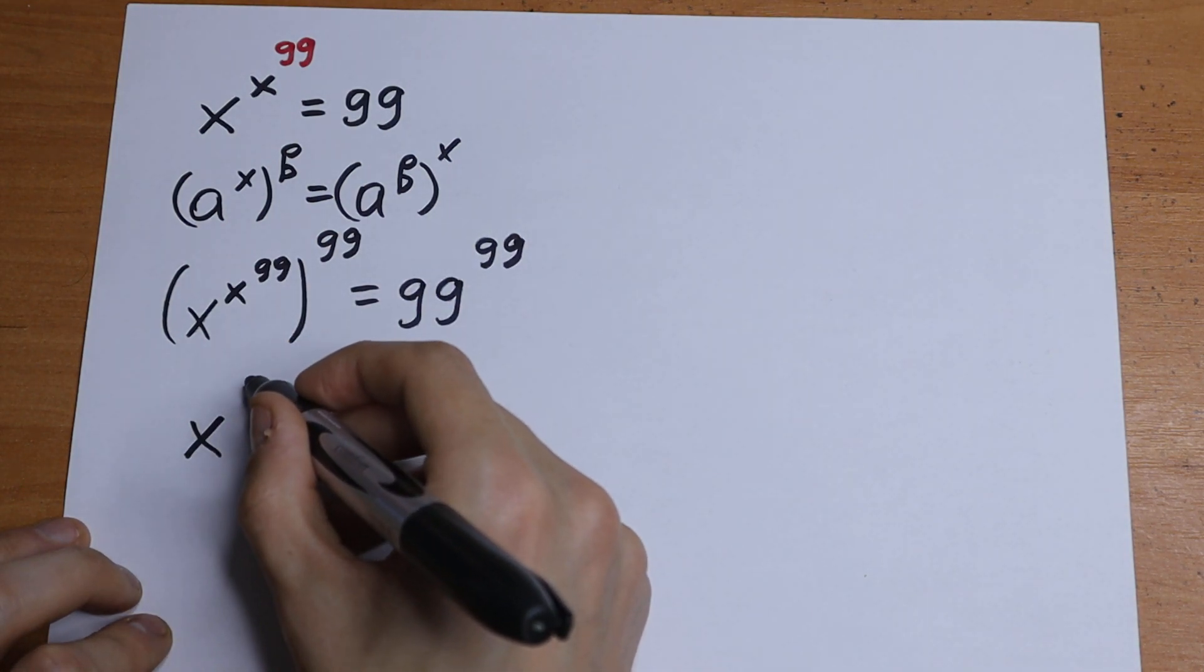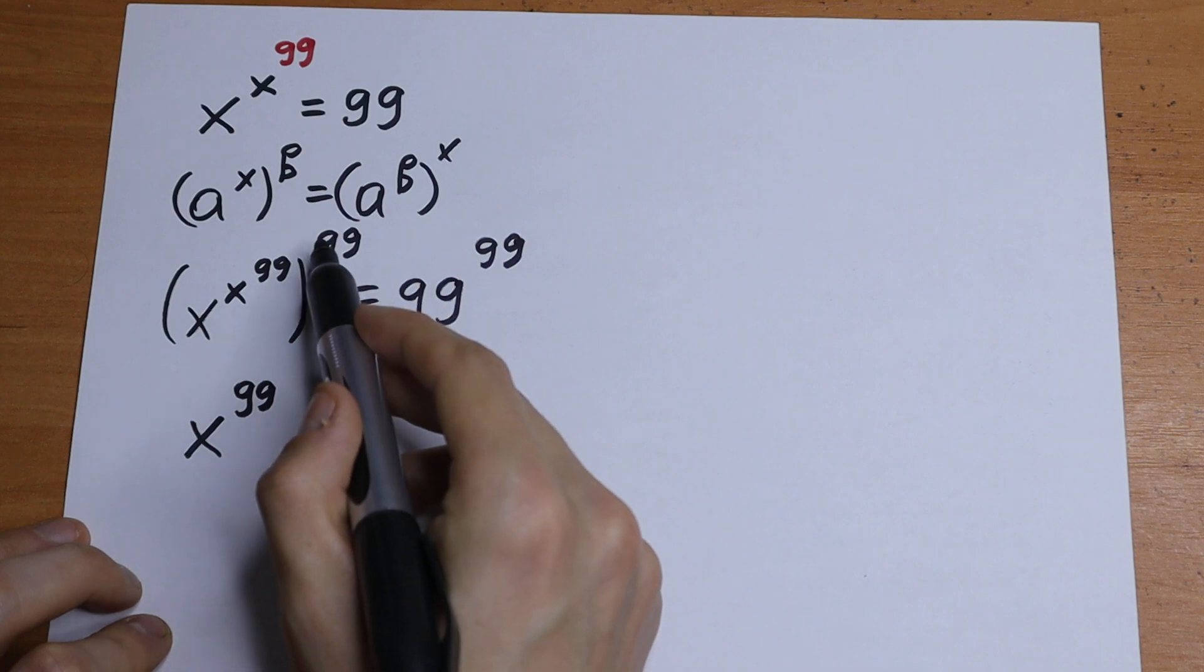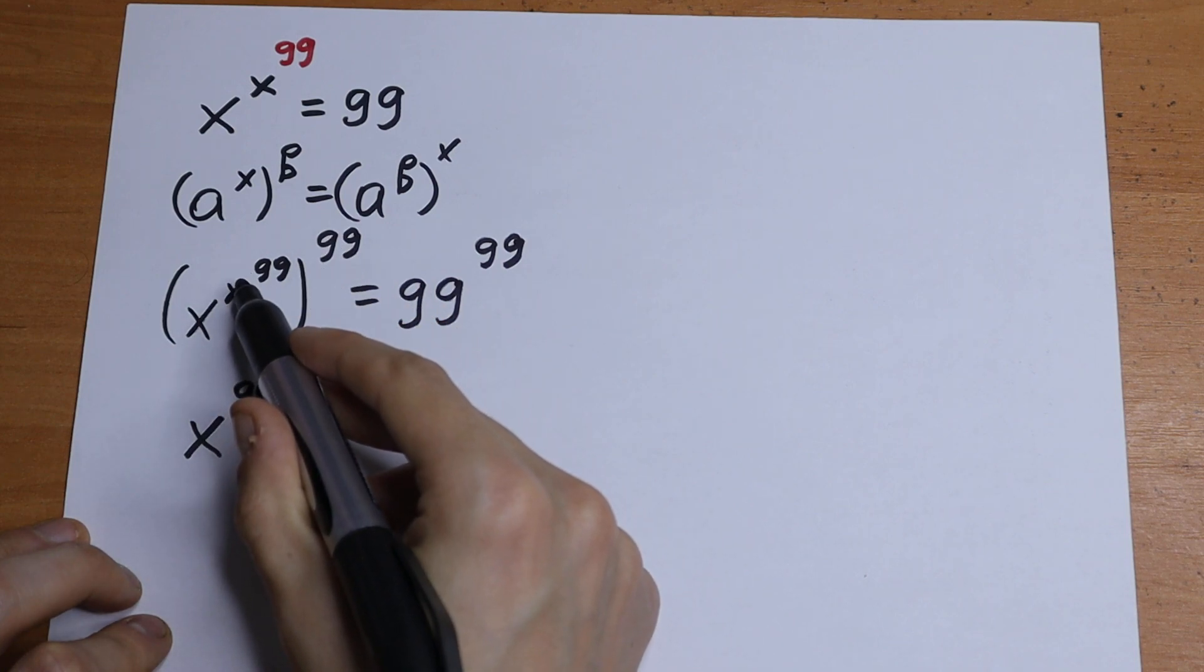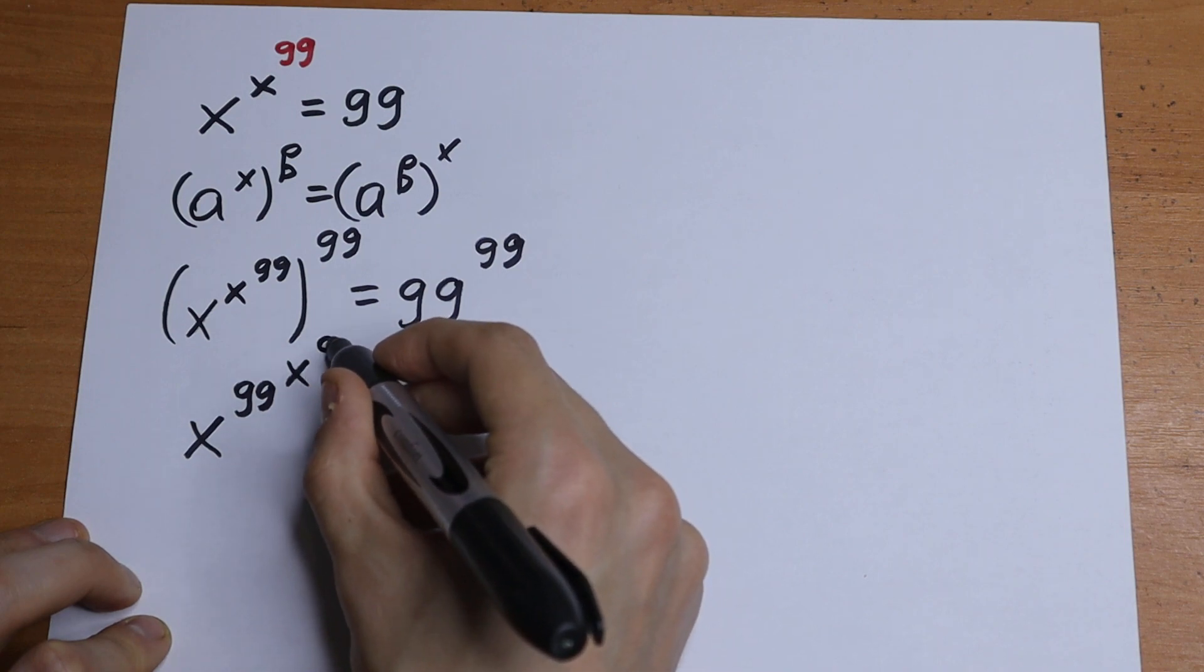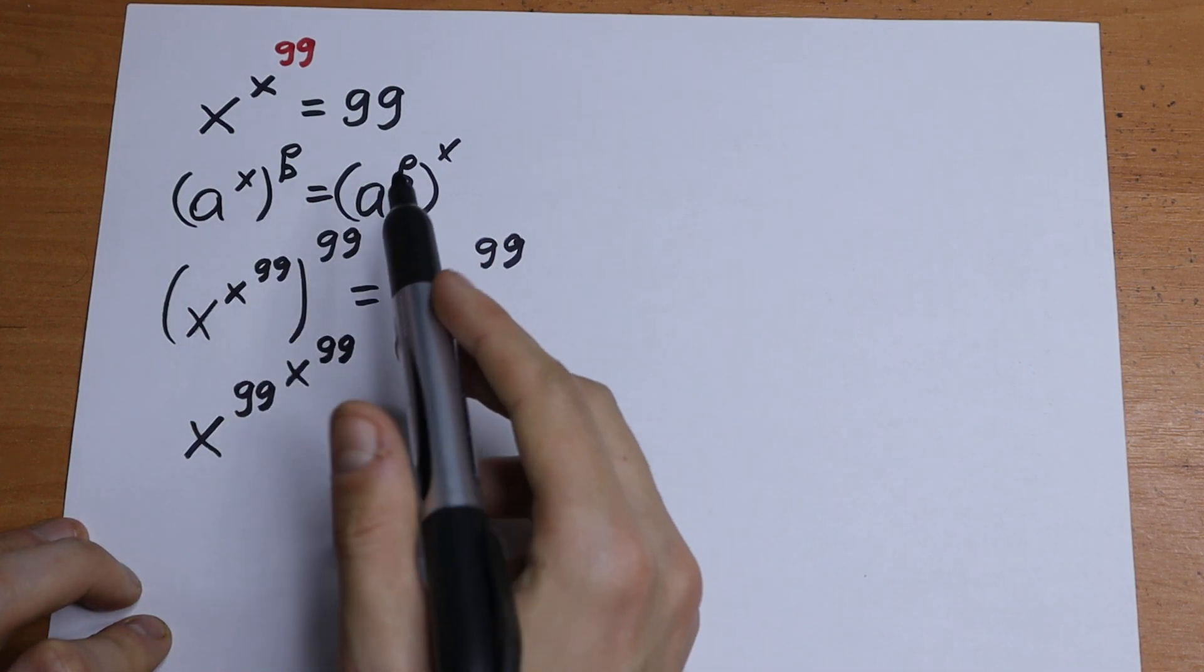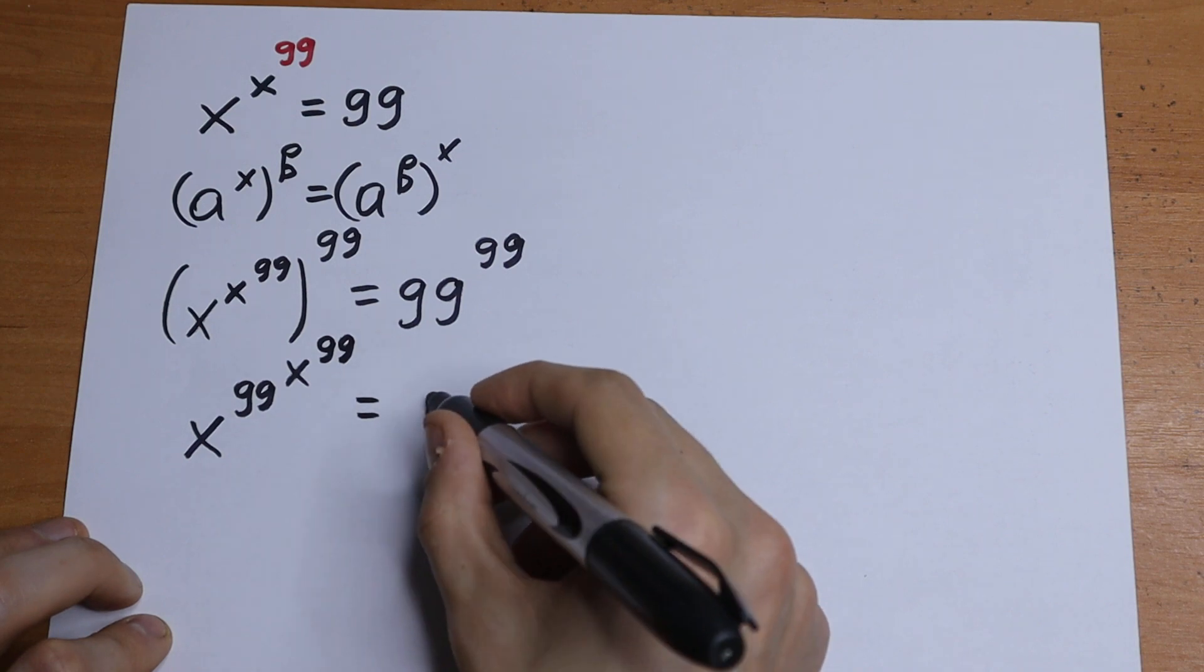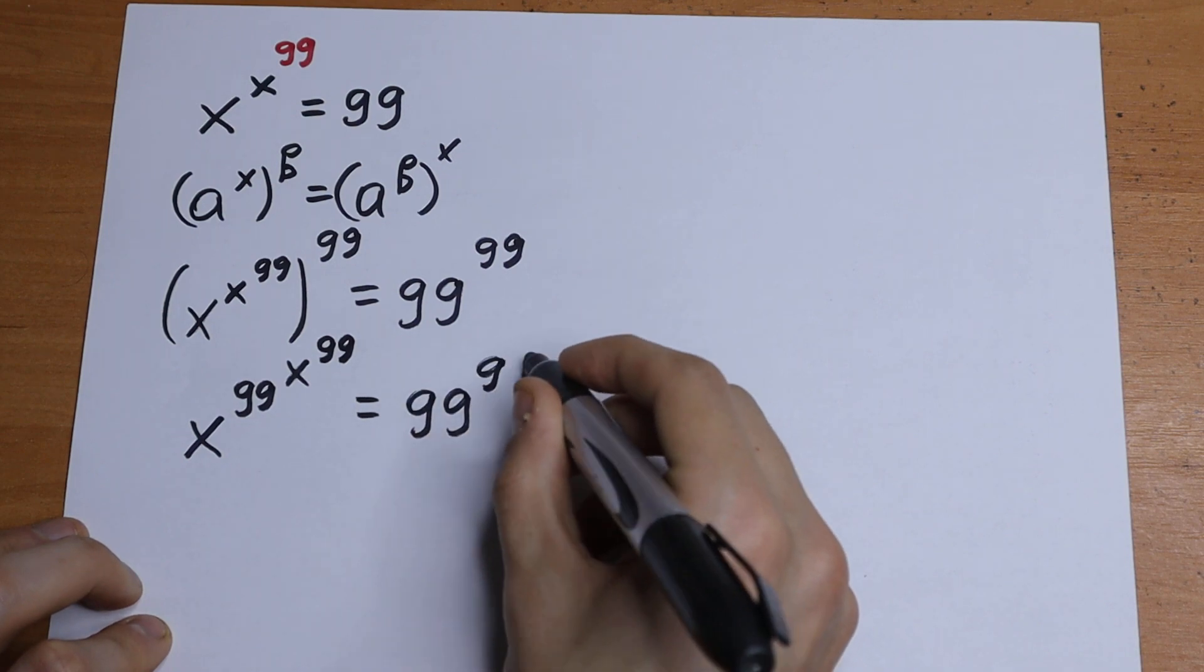We will have x to the 99th power, writing this at first, and all raised to the power x, all to the 99th power. Using this rule of interchange we swap this exponent, equal to 99 to the 99th power.